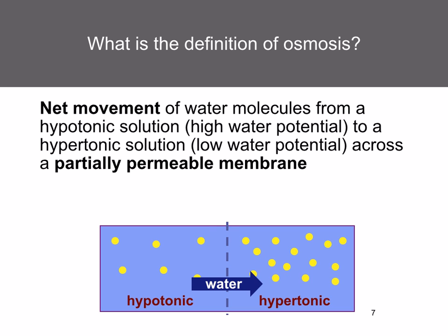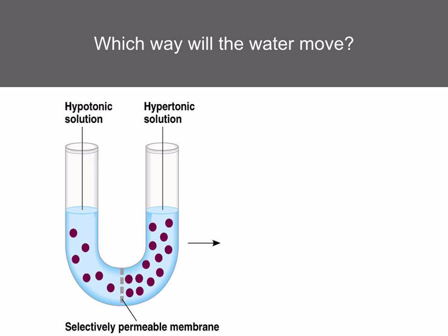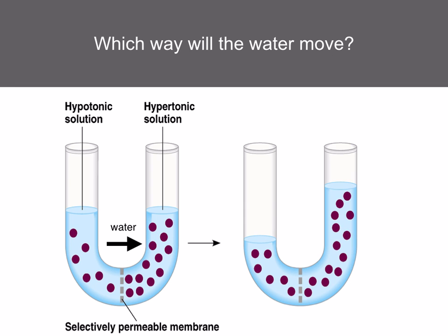Consider a capillary tube with different solutions on either side of a partially permeable membrane. This partially permeable membrane will only let water across — it won't let the solutes across. Water moves from the hypotonic solution to the hypertonic solution. So the water level on the right is going to rise and the water level on the left is going to fall.